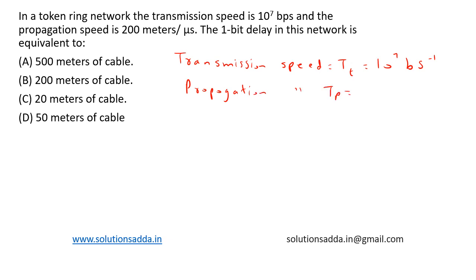Propagation speed is equal to T_p equal to 200 meters per microsecond. So transmission time is equal to length by bandwidth, and propagation time T_p is equal to distance by velocity.